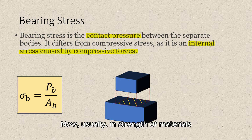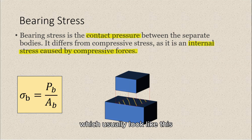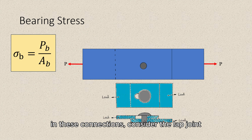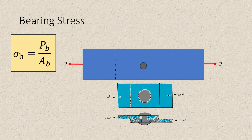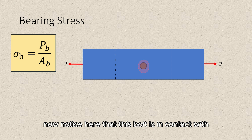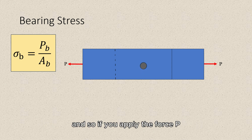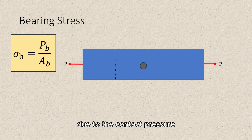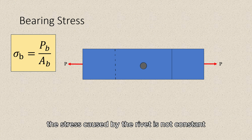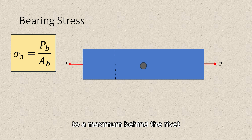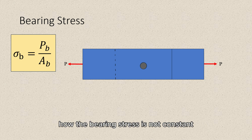Now usually in strength of materials, we are interested in the bearing stress in bolt connections. As an illustration, consider the lap joint formed by two plates that are riveted together. This rivet connects the two plates. Notice that this bolt is in contact with the plates, and so if you apply the force P, this bolt will develop an internal stress due to the contact pressure. The stress caused by the rivet is not constant — it actually varies from zero at the sides of the hole to a maximum behind the rivet.